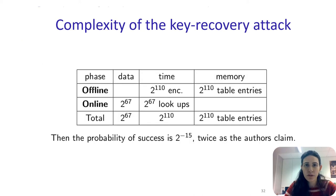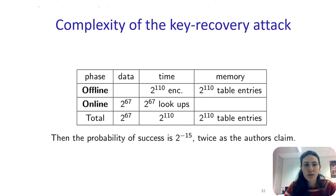This table summarizes the online and offline complexities together with the total complexity of the attack. The total complexity has 2 to the 67 data, 2 to the 110 time, and 2 to the 110 table entries as memory.